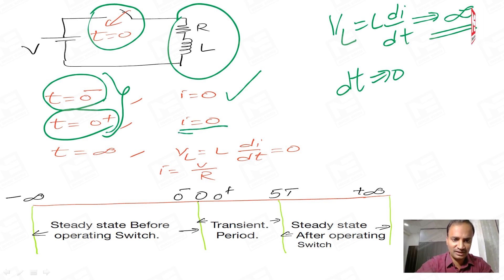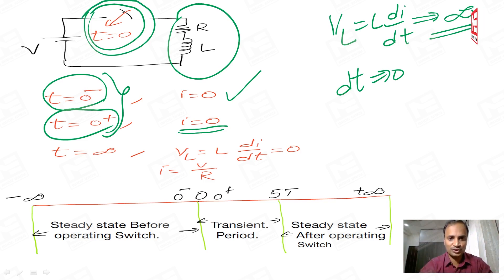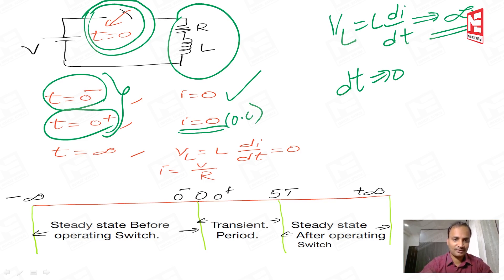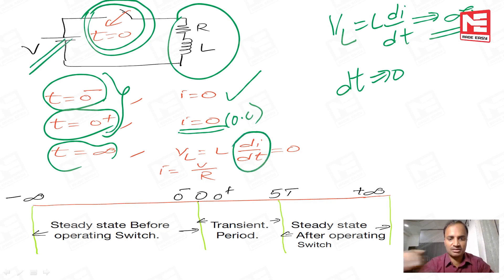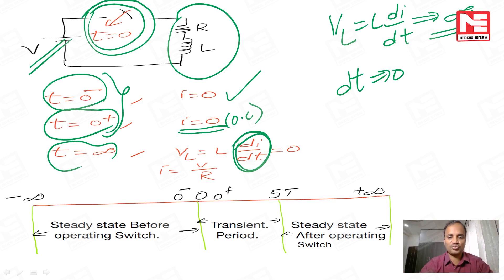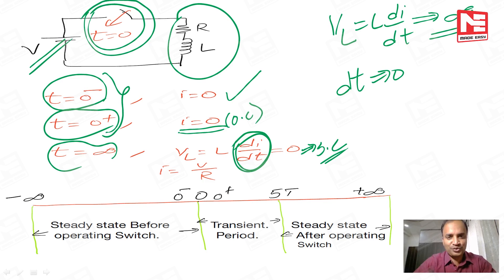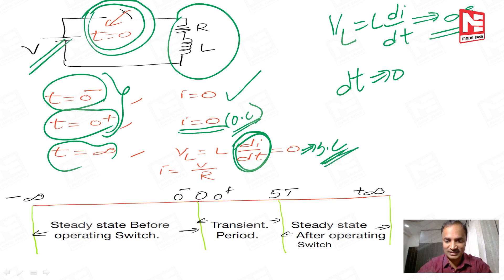Therefore, at zero plus the current remains equal to zero. At zero plus the inductor behaves as an open circuit — current equal to zero is the property of the open circuit. At t equal to infinite under steady state condition, the current is constant, so di/dt becomes zero, and thereby the inductor voltage also becomes zero — voltage equal to zero is the property of a short circuit. So whenever the switches are operated, initially the inductor behaves as an open circuit, and later under steady state condition the same inductor behaves as a short circuit — its behavior changes with respect to time.